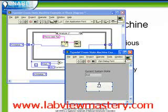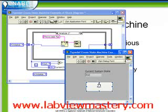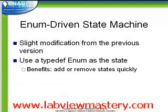So we can see immediately the power of this — that we can modify our states, add new states, remove states relatively easily, without having to go back and modify each of the constants everywhere. In this section we looked at the slight modification to the previous state machine, which replaced the enum we were using to define our states with that of a typedef. The key benefits of which are that it allows us to add and remove states very quickly.